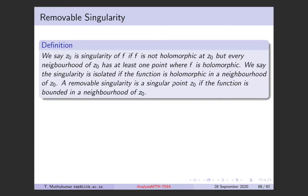A removable singularity is a singular point where the function is bounded in a neighborhood of z₀ (excluding z₀ itself). Isolated singularities can be divided into three types: removable singularities, poles, and essential singularities.